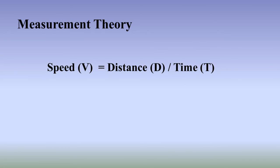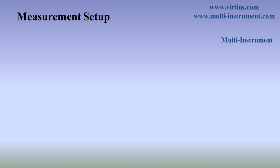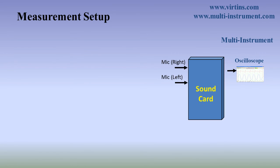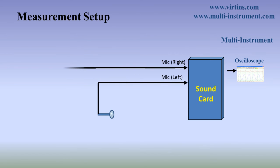Here is the measurement setup. It is based on the software Multi Instrument, which can be downloaded from our website at www.virtins.com or www.multiinstrument.com. We will only use its oscilloscope function. The hardware of the setup is a computer with a sound card with stereo inputs. Two microphones are connected to the left and right microphone inputs respectively.